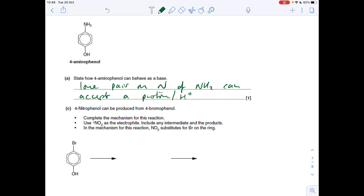Next part, we've got to complete the mechanism for the reaction. Told what uses the electrophile. Include intermediate and products. And we're told that the NO2 substitutes for the Br on the ring. So obviously that's going to come off and the NO2 is going to go on. So electrophile, bring that in. Pair of electrons from the pi electron cloud to the N of the electrophile. That's going to generate the intermediate. So we'll get a partial electron cloud, positive charge. Show the bromine. It's not a hydrogen in this case. Often is in other mechanisms. But it's a bromine in this case. Nothing happens at the bottom there. So that's the intermediate.